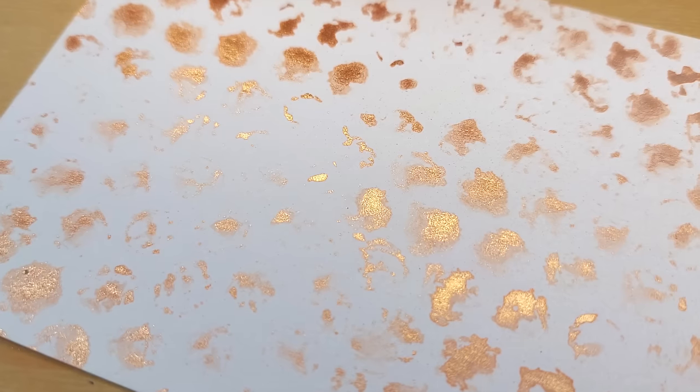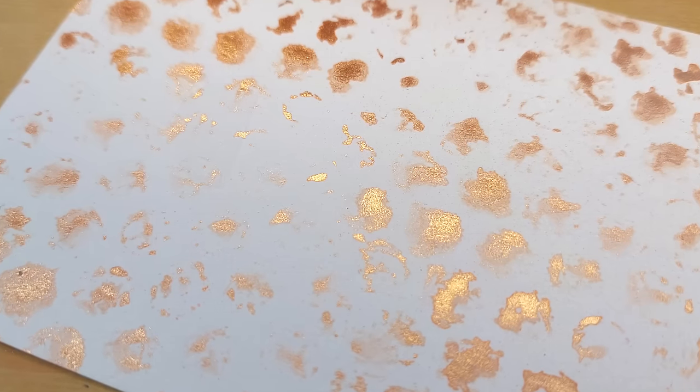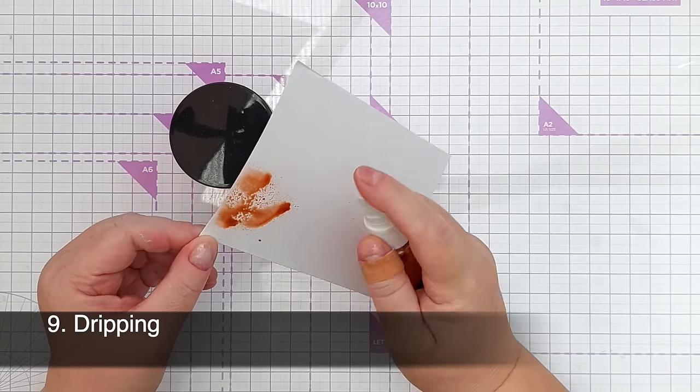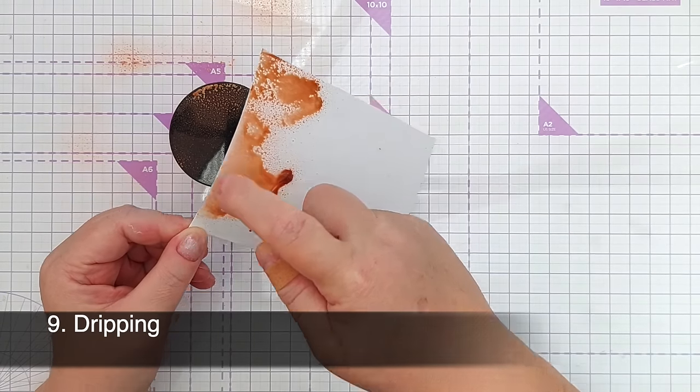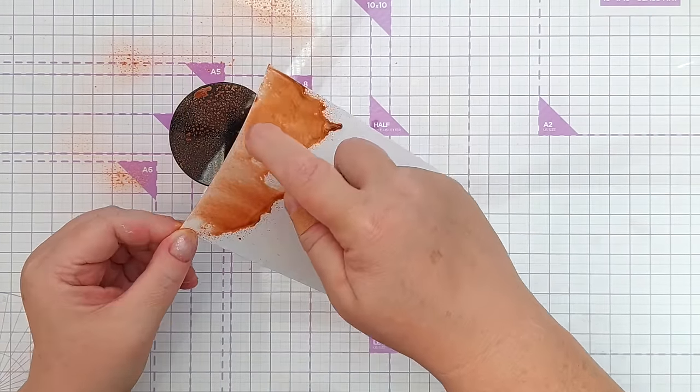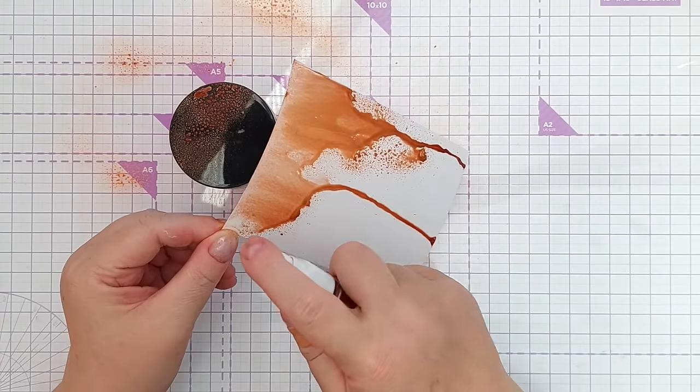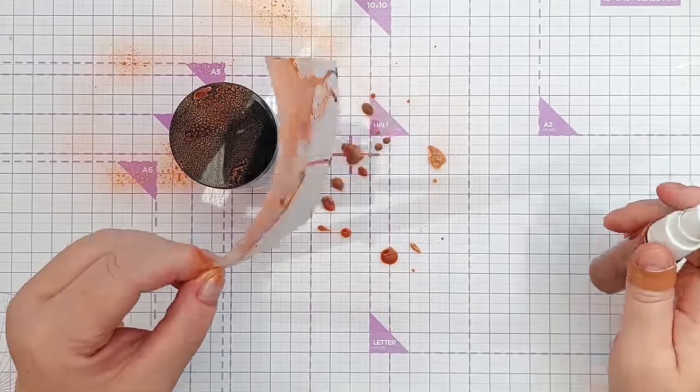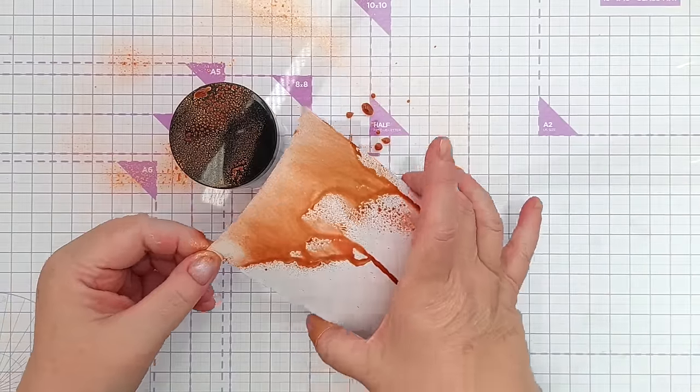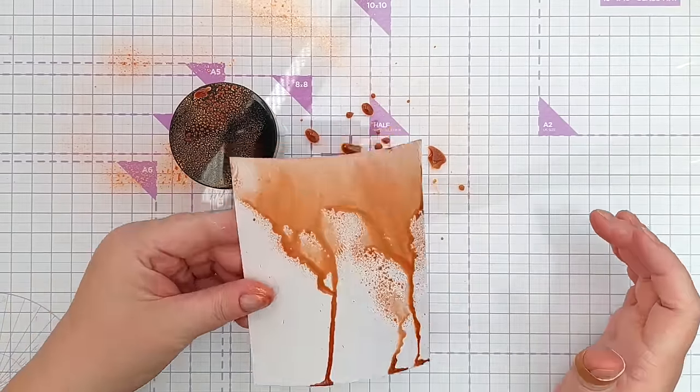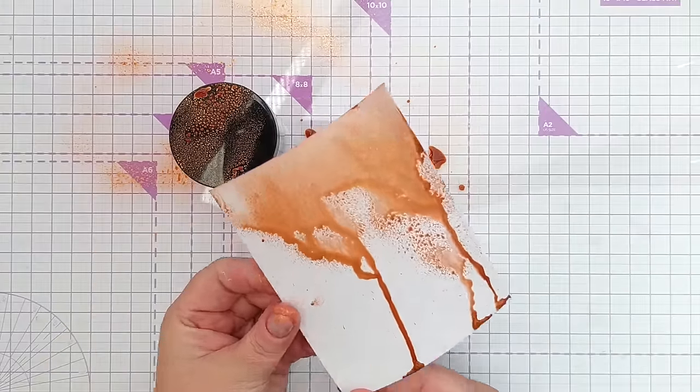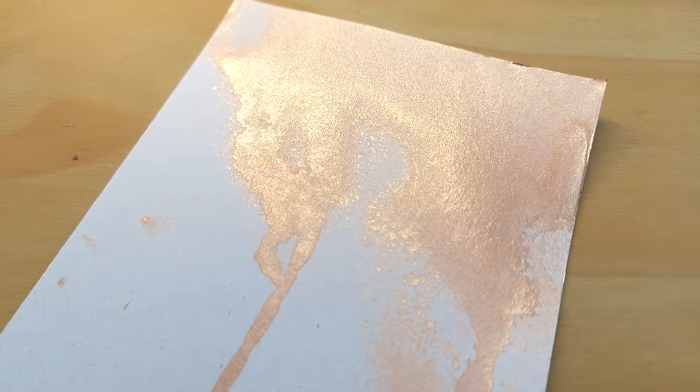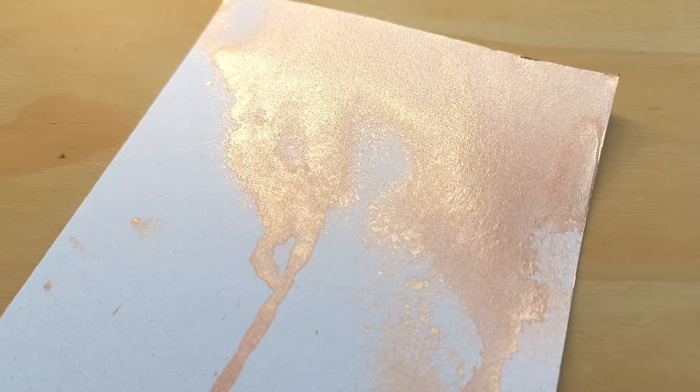For technique number nine I did some dripping. So I propped my card up on a pot, spritzed the top of the card with my sprayer and then let the spray drip down the paper. You could use different color sprays for this—you could spray one color and then add another color on top and let them drip down and mix and mingle together. The world's your oyster with dripping really. I think I might take a permanent black marker and doodle over the top of these and turn these maybe into balloons.